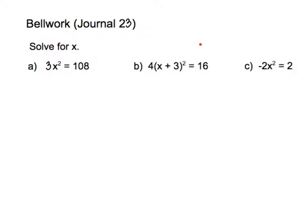Here in journal 23, last time we were working on solving for x when we have x squared. So if I wanted to get x by itself, I need to get x squared by itself first, so I need to remove this 3. If I were to remove this 3, I'm dividing both sides by 3, and so that cancels. x squared drops down, and 108 divided by 3 is 36.